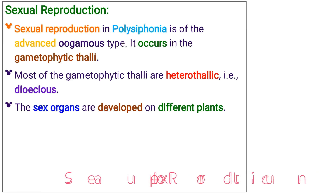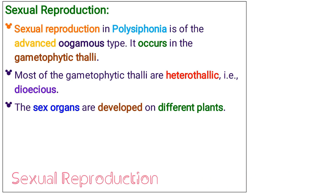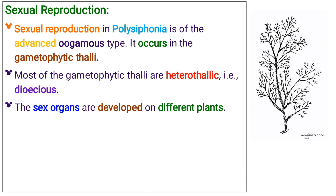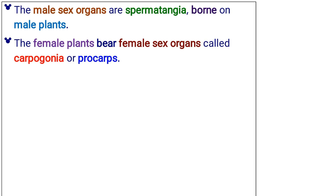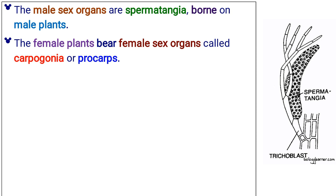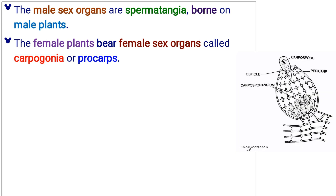Sexual reproduction in Polysiphonia is of the advanced oogamous type. It occurs in the gametophytic thalli. Most of the gametophytic thalli are heterothalic, that is, dioecious. The sex organs are developed on different plants. The male sex organs are spermatangia, borne on male plants. The female plants bear female sex organs called carpogonia, or procarps.